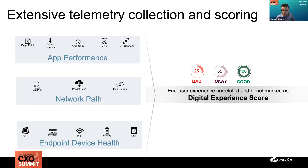From an endpoint perspective, we look at time-series usage of CPU, memory, and disk, but also critical device events. For example, if your device restarted or flipped to a different Wi-Fi network, we can correlate that with a drop in the application score. Bringing that single pane of glass from an endpoint, network, and application perspective together is exactly what ZDX provides.